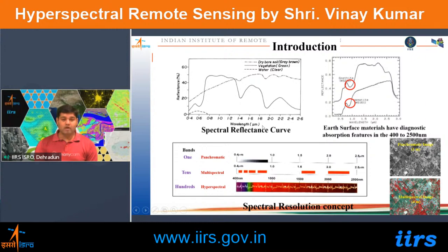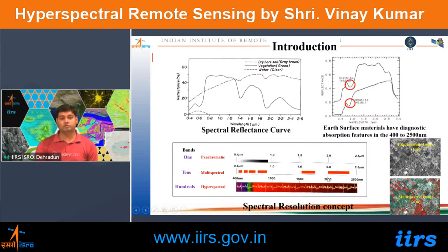If you have to identify different vegetation species — not just that it's vegetation from an FCC image — you require hyperspectral data. For example, two minerals shown here have diagnostic absorption features at specific wavelength regions that are visible only when you have hyperspectral data, because you get a detailed spectral reflectance curve of each feature.